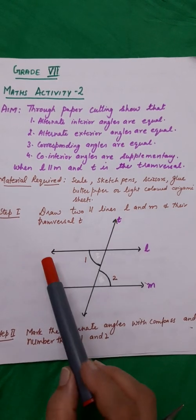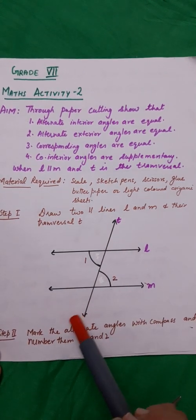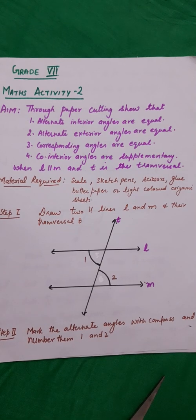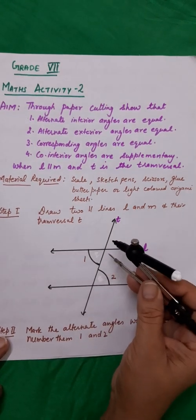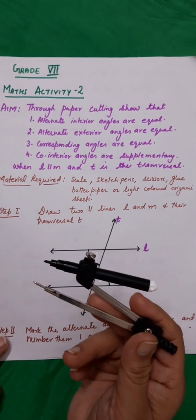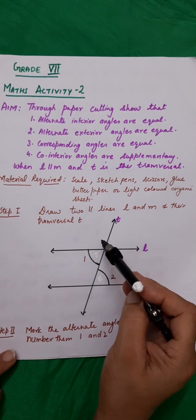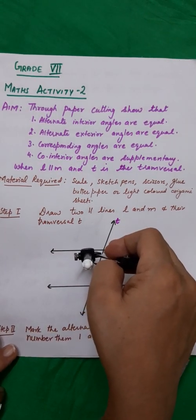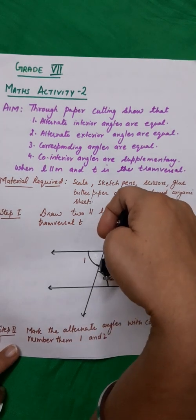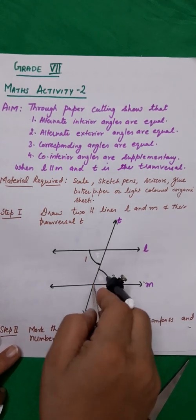First step is to draw two parallel lines L and M and their transversal T. After that, mark the alternate interior angles with the help of a compass and number them 1 and 2. I have already done it to save time. You take a compass, fit in any colored sketch pen, and open it to a sufficient radius so that you can mark the angles nicely.